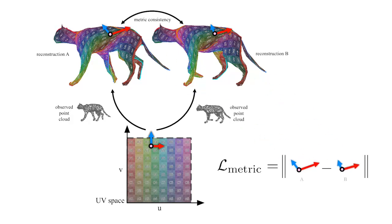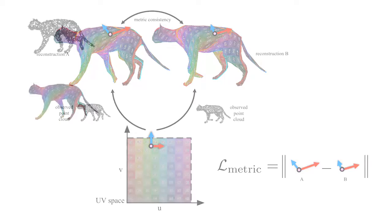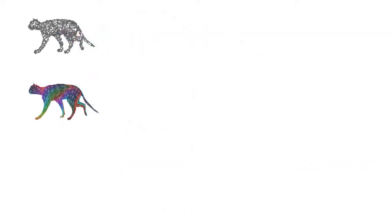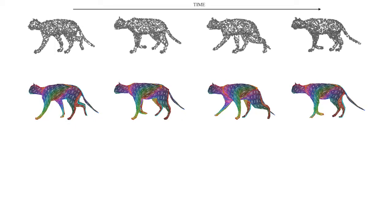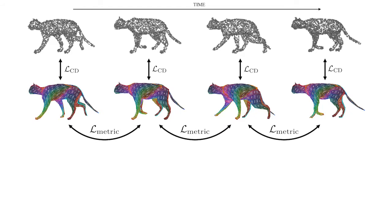To this end, we formulate a novel metric consistency loss term. To summarize, given a sequence, our loss is comprised of two terms. First, for each individual point cloud, we make the reconstruction fit to the input by minimizing the chamfer distance. Second, we enforce time-coherent reconstruction with meaningful correspondences by minimizing the metric consistency loss between pairs of reconstructions.